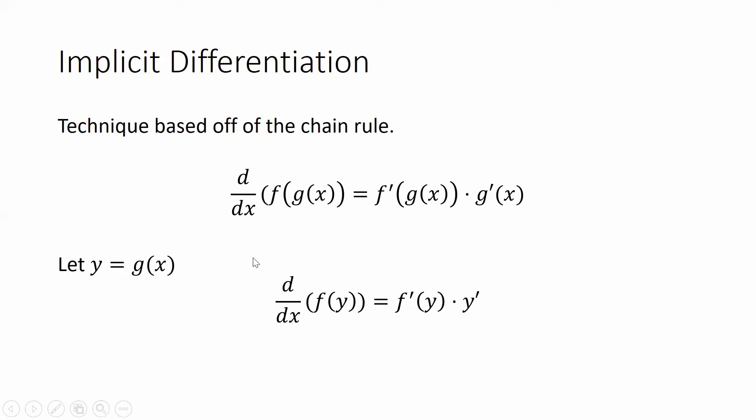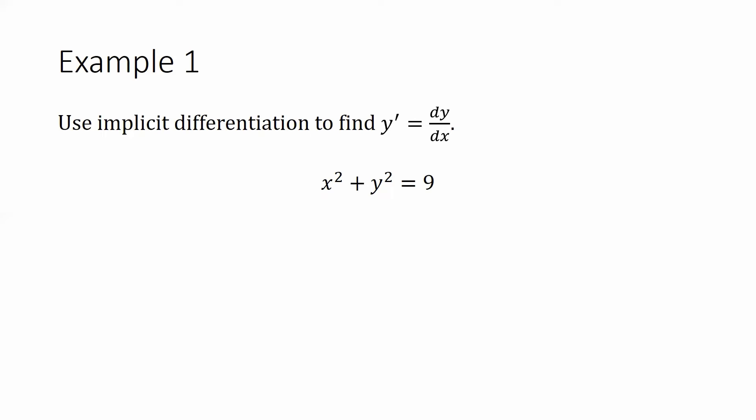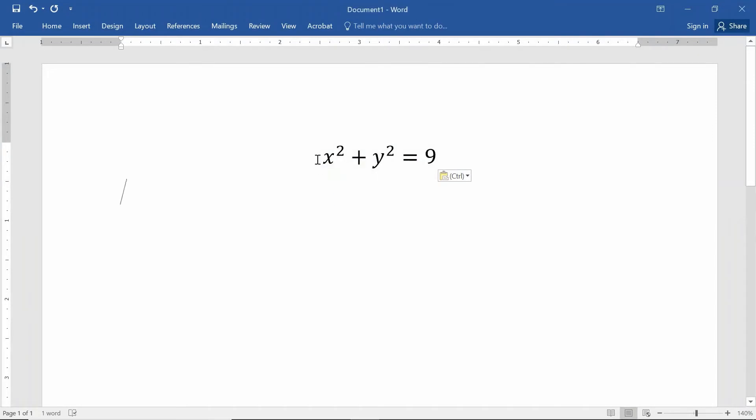Now, sometimes it's going to be harder than others to solve for y prime. So let's do an example here. Let's use implicit differentiation to find y prime or the derivative of y with respect to x. Let's do that for our circle of radius 3. Here's our circle of radius 3. And what we're going to do is we're going to take both sides and we're going to take a derivative with respect to x of both sides of the equation. So we're going to take a derivative with respect to x of the left-hand side and then a derivative with respect to x of the right-hand side.